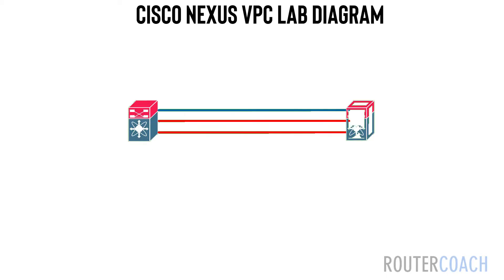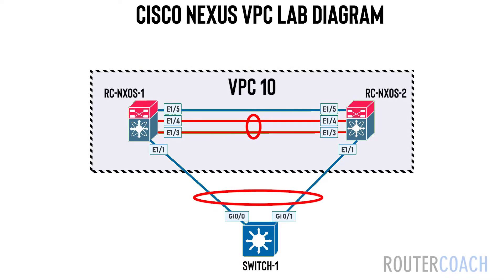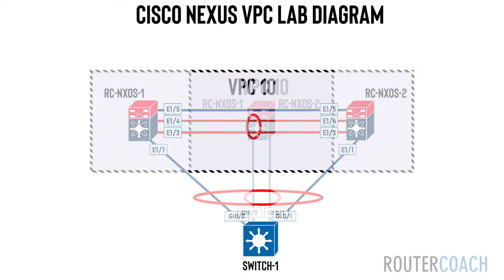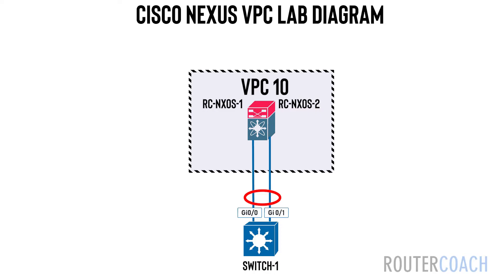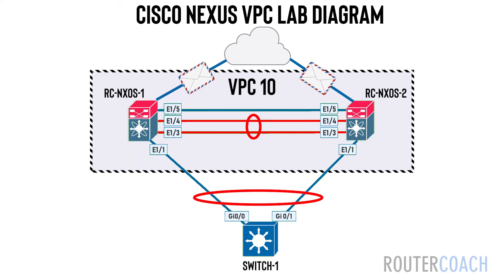Often called multi-chassis link aggregation, or MC-LAG on different vendors' equipment, Cisco's Virtual Port Channel, VPC, allows links from two different Cisco Nexus switches in different locations to appear as a single port channel to an endpoint device. This eliminates a single point of failure on the Nexus switches, because even though they could be geographically dispersed, even if a DC was to fail, there would still be full redundancy to the other peering Nexus device.